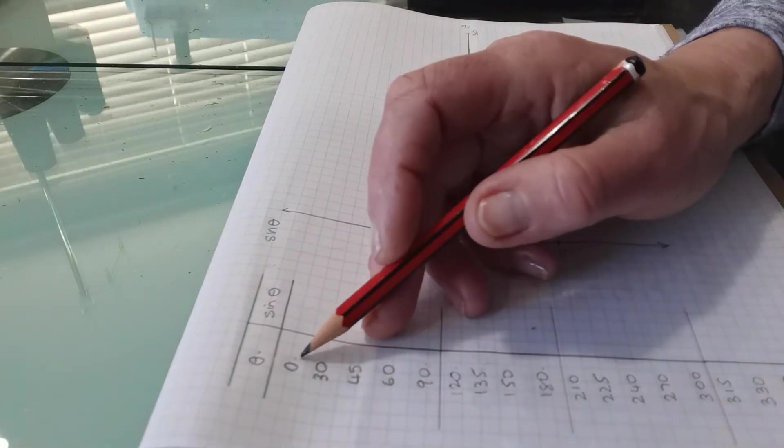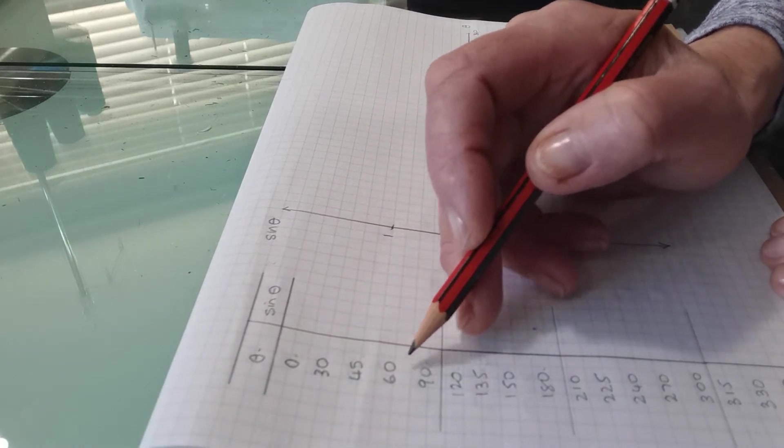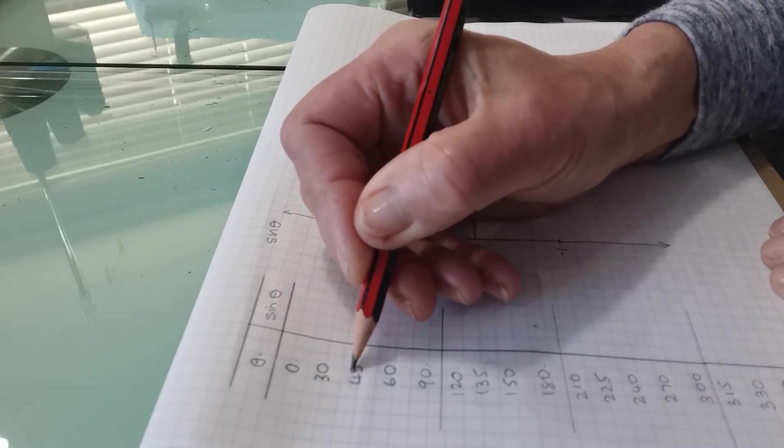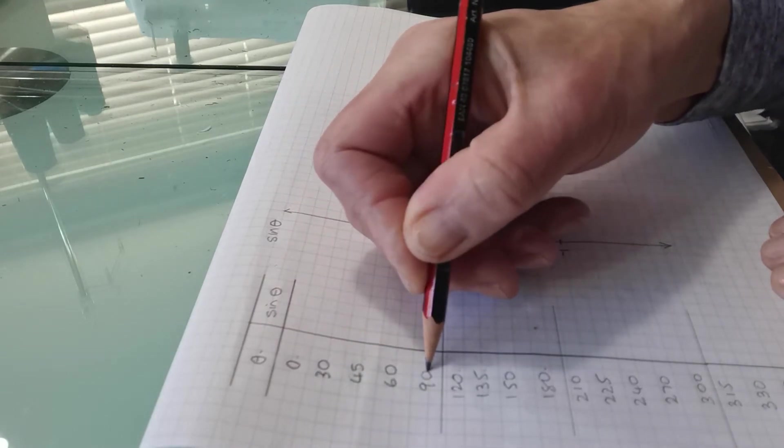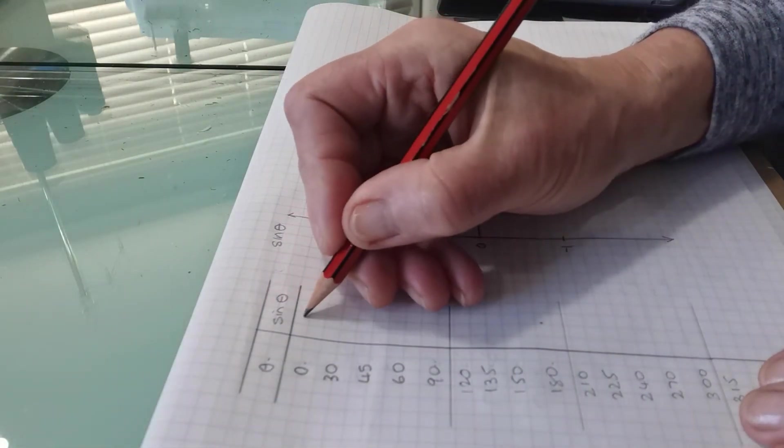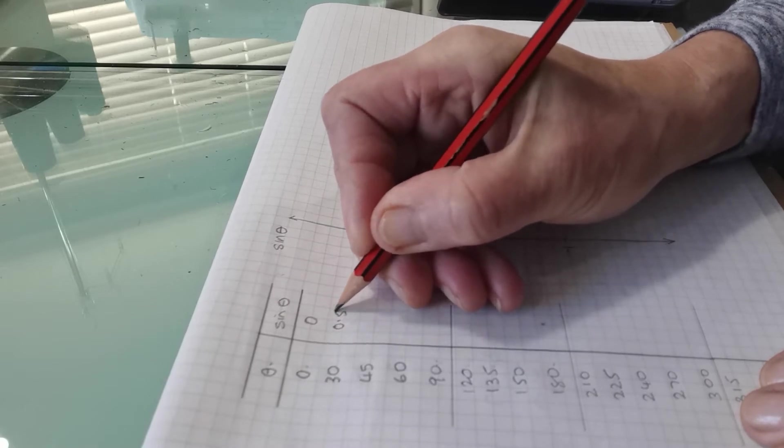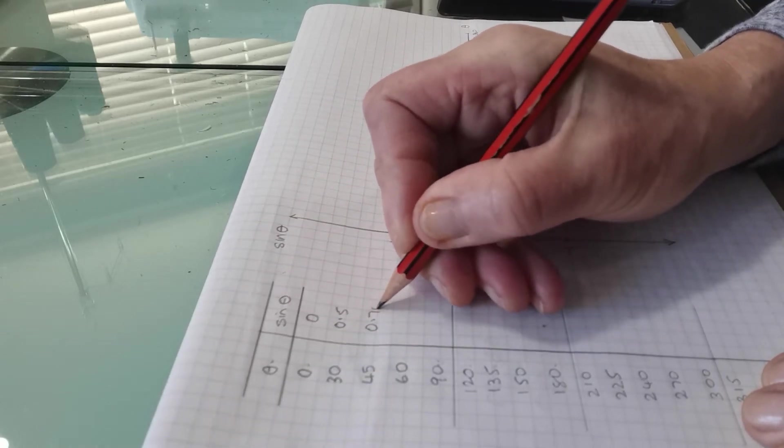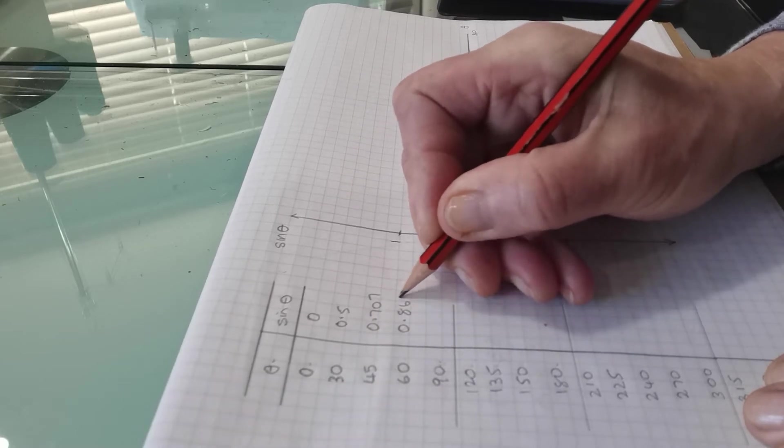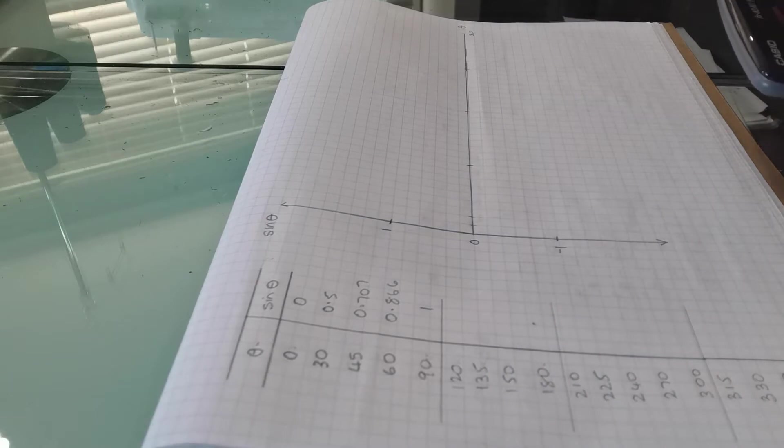So the first one 0, 30, 45, 60 and 90. So that's 30 degrees then 15, 15 and then up 30. So putting in the values you might remember that it's 0, a half, 0.707, 0.866 and 1 and you can check those on your calculator.